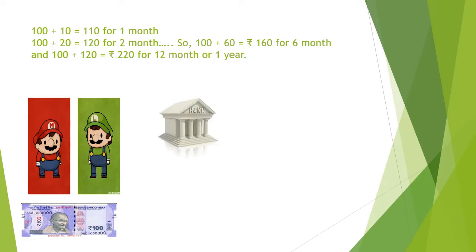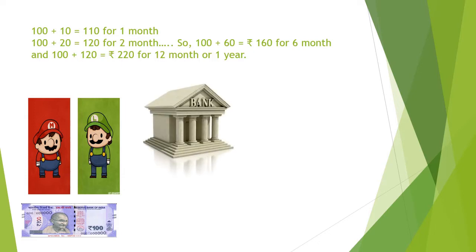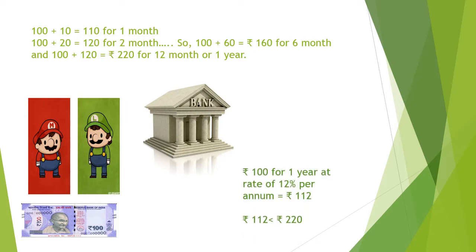So M went to the bank to find out. He learned that on every 100 rupees, he would have to pay only 12 rupees for 1 year. This deal was much better — 112 rupees is less than 220 rupees.